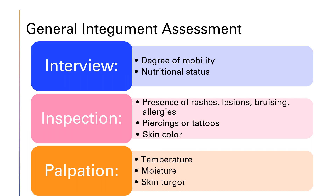When we assess the integumentary system, we start with inspecting — looking at the general skin color of the body parts. We also want to make sure the color is equal on both sides, meaning both arms are the same color. If they are different, that would be a cue that something is wrong.